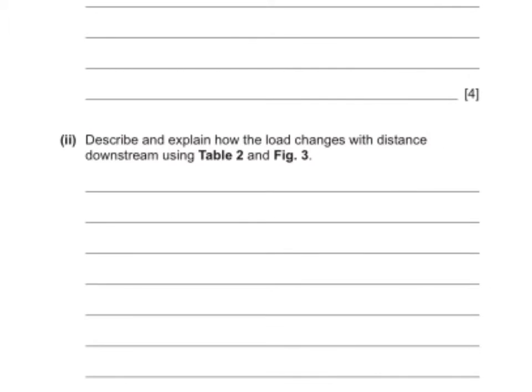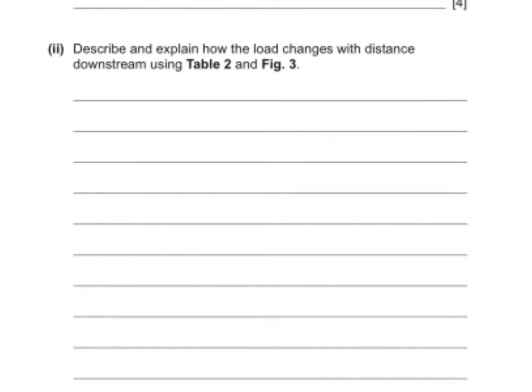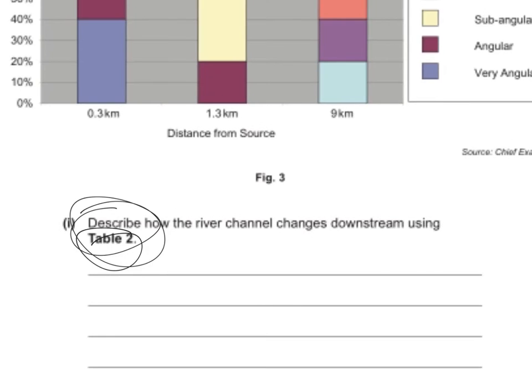Second question, describe and explain how the load changes with distance downstream using table two and figure three. Describe is the first command word, and then explain is the second. So you've got to do two things here. Start with the describe first of all.